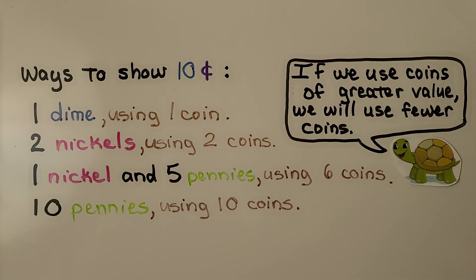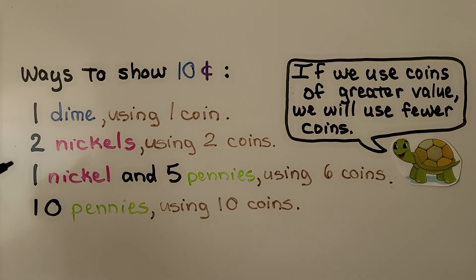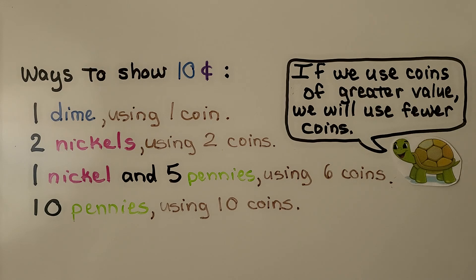Here are some ways to show 10 cents. We can show it as a dime — one coin. We could have two nickels — two coins. We could do a nickel and five pennies — six coins. Or we could use 10 pennies — ten coins.